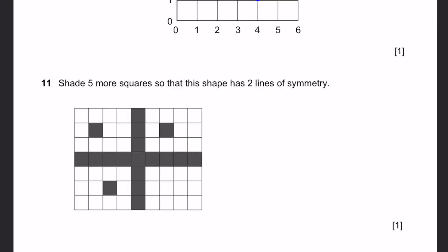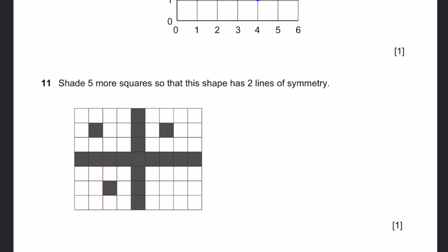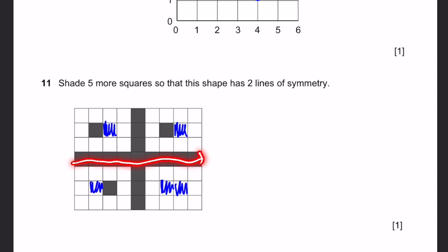Question 11. Shade 5 more squares so that this shape has two lines of symmetry. We can make sure that the shaded area is symmetric on all four sides. So we shade this one, this one, this one, the fourth one, and the fifth one. Then we can divide it straight down the middle of both dark lines.